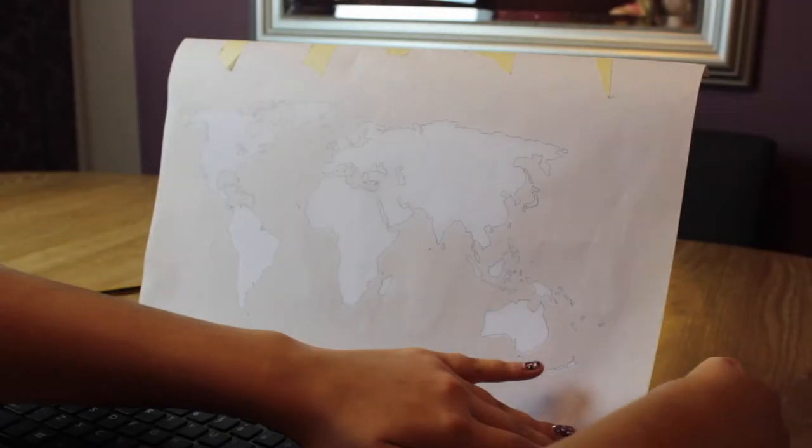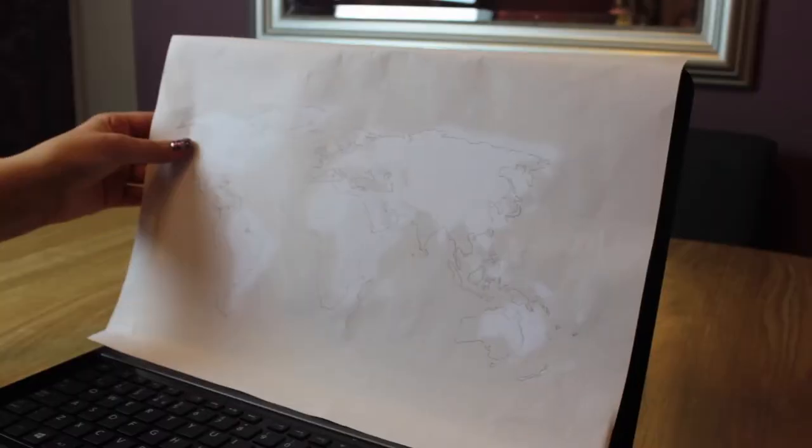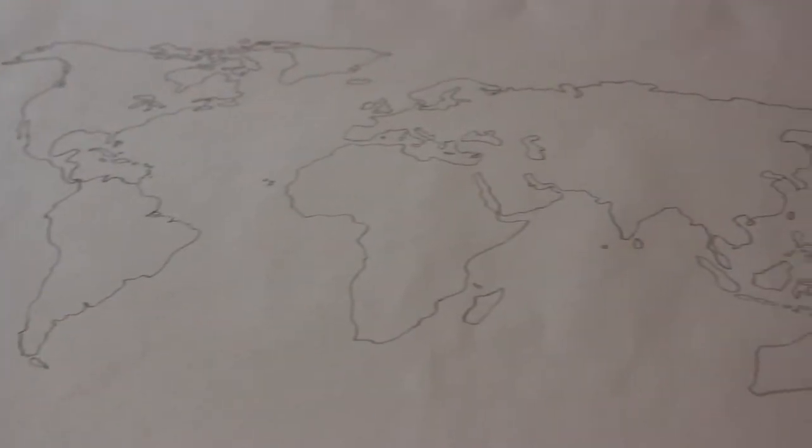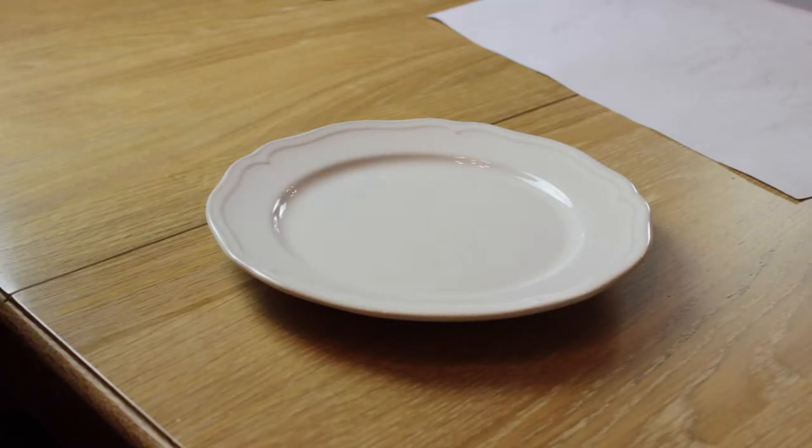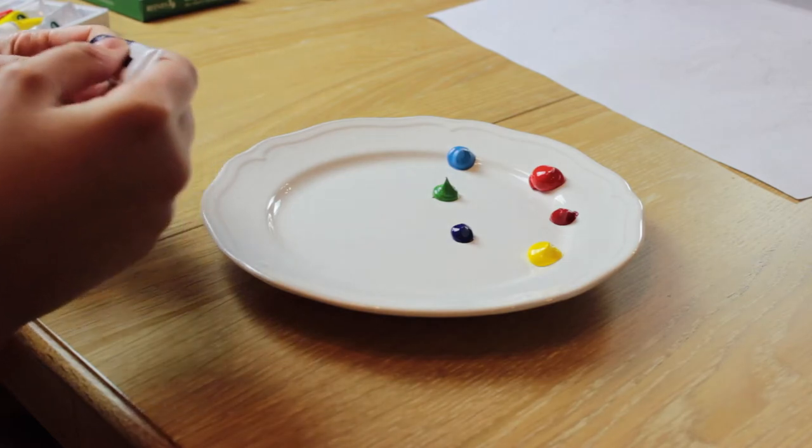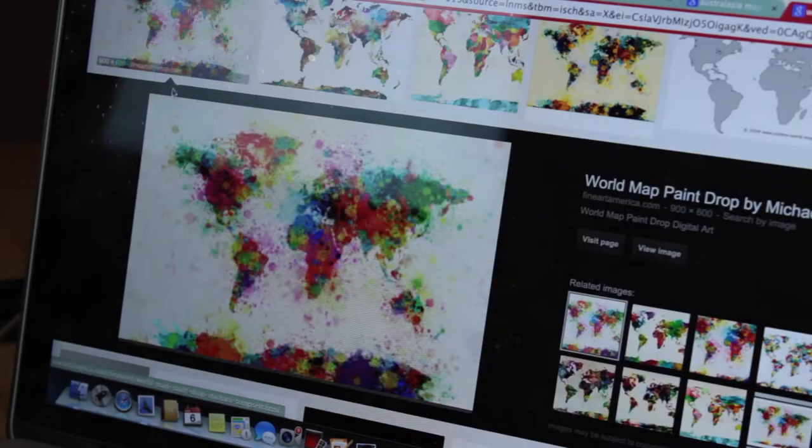Once you've finished tracing your map, you can take off the masking tape and remove your paper. Then you're going to want to get some kind of plate or something so you can pop your paint on there. I chose a few different colors and you can either get inspiration from the internet or just do what you want.